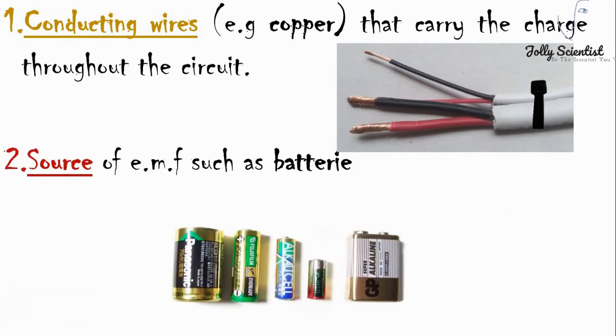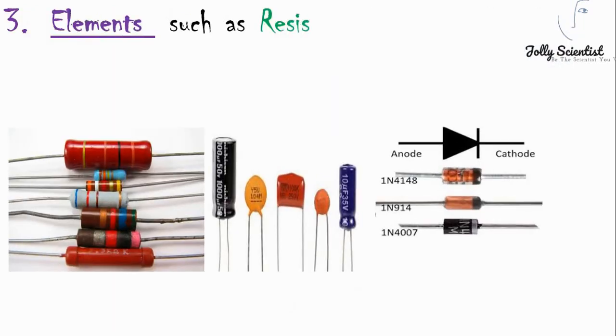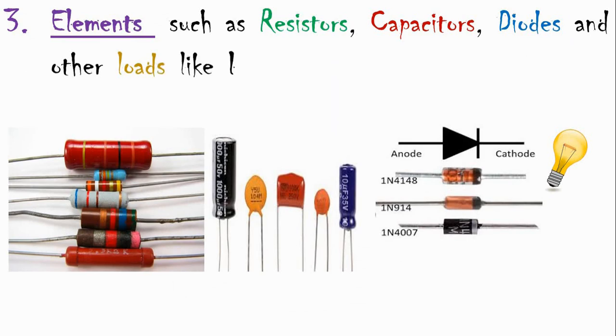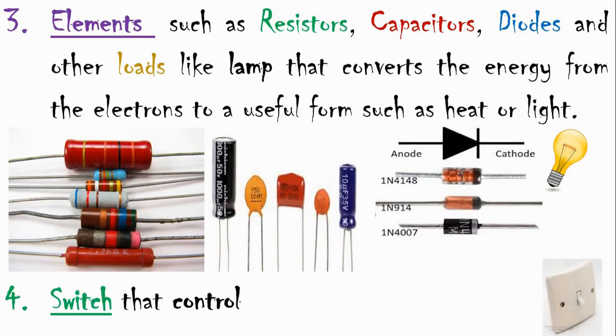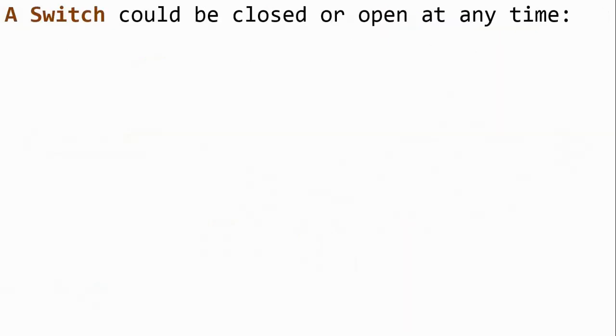Second is the source of EMF, such as batteries. Third is the element, such as the resistor, capacitors, diodes, and other loads. Fourth is the switch, which controls the flow of electrons in the circuit. A switch can be closed or open at any time.